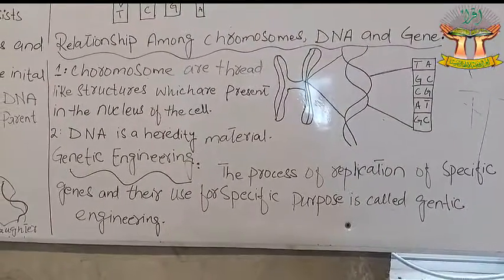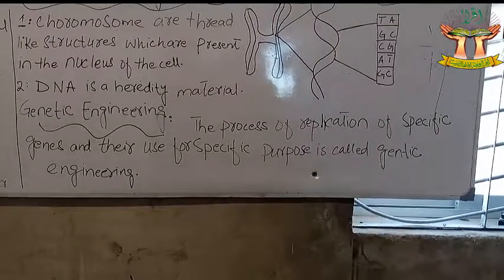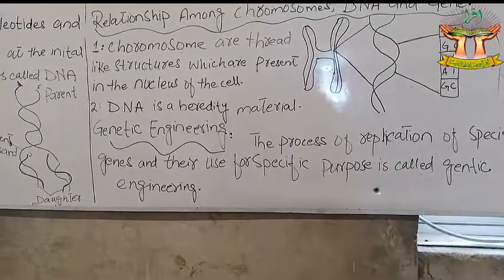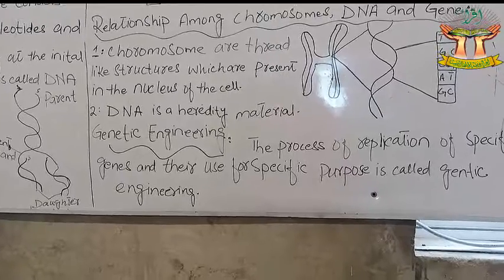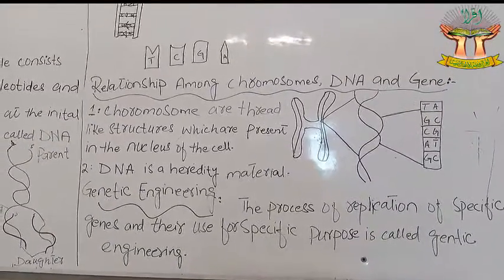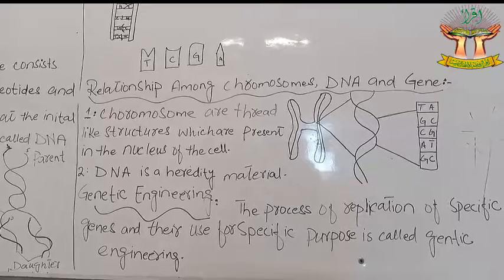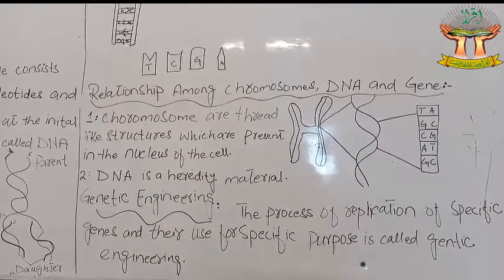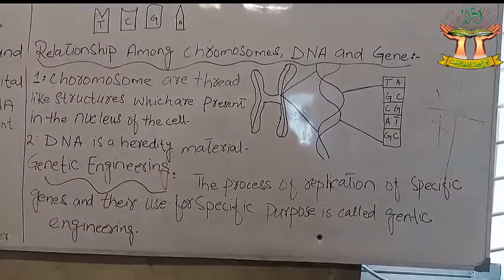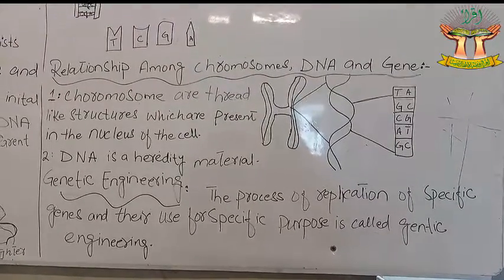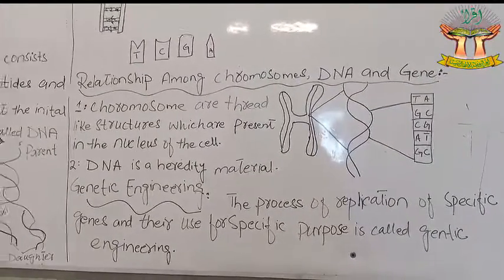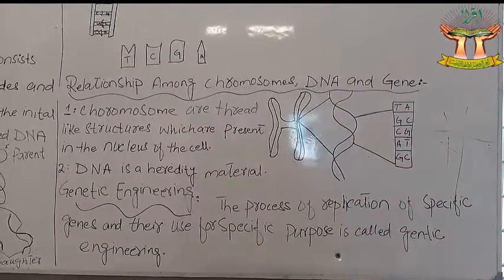Genetic engineering is used for producing medicines, vaccines, and insulin. It is also used for developing better crops, planting new types of plants, and developing desired traits in plants or animals. Genetic engineering is used in agriculture to develop new seeds and improve plants.